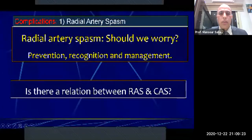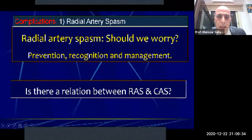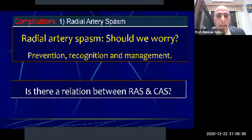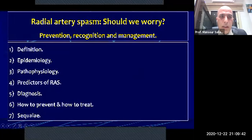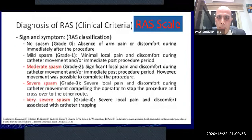I will start with the first complication: radial artery spasm — should we worry, prevention, recognition, and management, and its relation to coronary artery spasm. We discussed this in detail two weeks ago in a separate session covering definition, epidemiology, pathophysiology, predictors, diagnosis, how to prevent, and sequelae. I have posted the link of that presentation on the Al-Azhar Radial Course Facebook page. But I would like to stress upon the radial artery spasm scale.